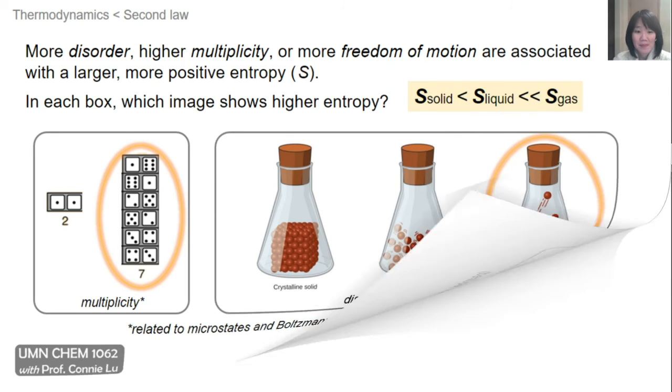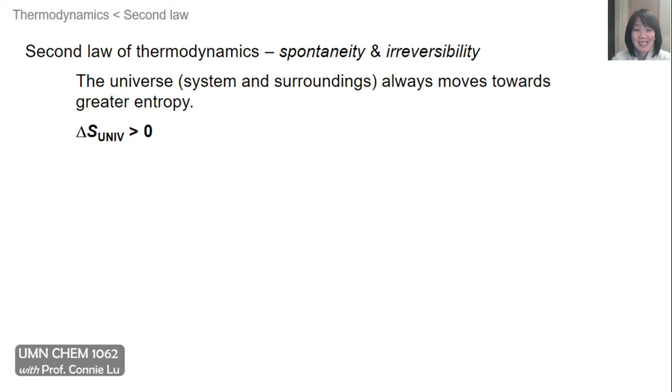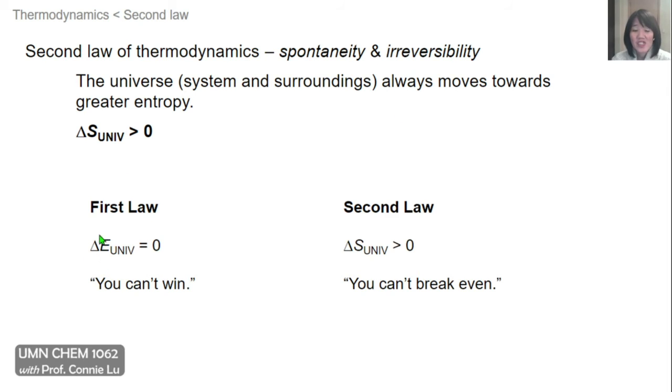The second law of thermodynamics states that the universe always moves towards greater entropy. Another way of writing that is that the change in entropy of the universe, delta S universe, must be greater than zero. And one way I like to think about the first and the second law of thermodynamics is simply by these equations. So in the first law, the change in energy of the universe must be equal to zero. But in the second law, the change in entropy of the universe must always be greater than zero.